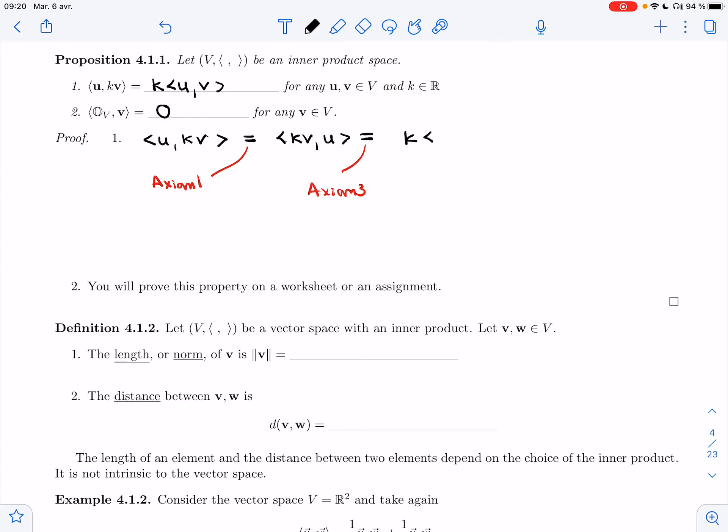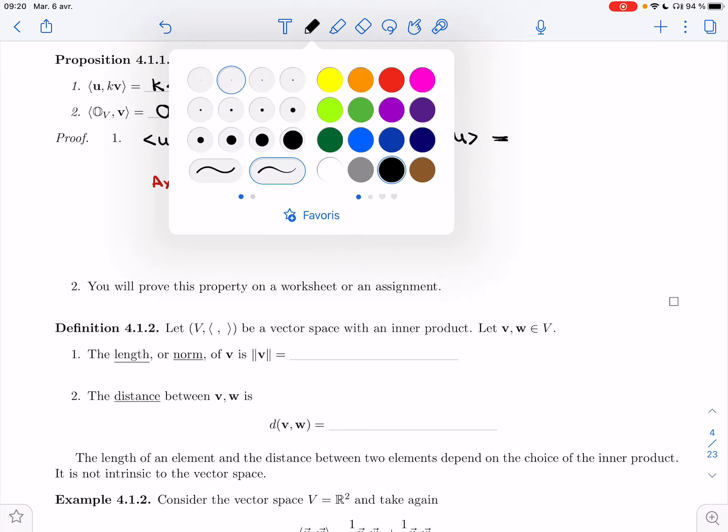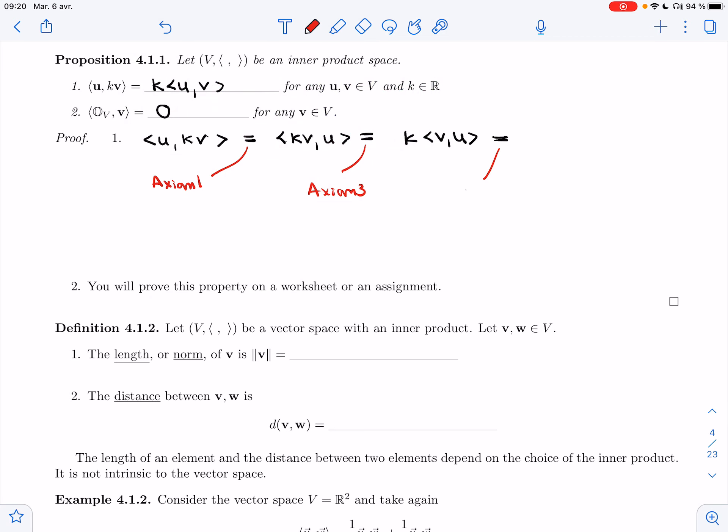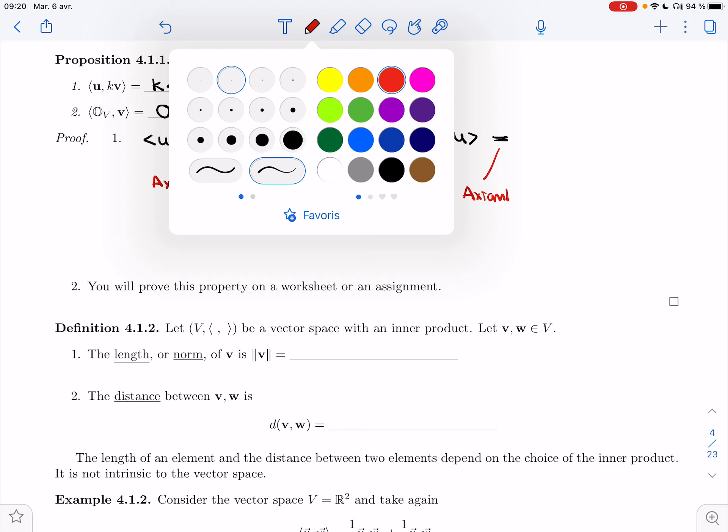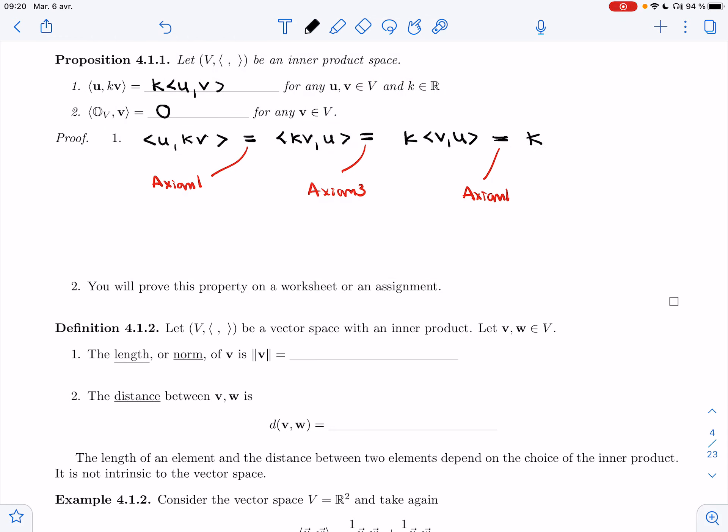So I'm going to get k times <v, u>. And I want to get to k times <u, v>, so I'm going to use axiom 1 again. We don't need to prove it for both components because axiom 1 allows us to switch the order of the components. So if we have it for one, we have it for the second one as well.